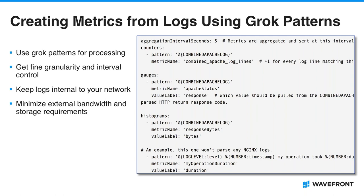Some advantages of how we handle log data are worth noting. You can define the granularity or interval that your log data is recorded into your metric. For example, you may want to know the number of errors occurring every 5 seconds rather than every 5 minutes, or you may only care about the total number of slow jobs processed every 10 minutes. All of your raw log data, including PII elements, stays within your environment — metrics aren't going to capture your customers' credit cards, email addresses, or other sensitive data. Additionally, because the processing happens within your network, our storage of your metric data is much smaller than the equivalent log data, and the bandwidth consumed by sending those to the Wavefront backend is quite small.